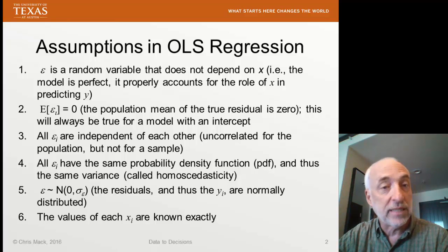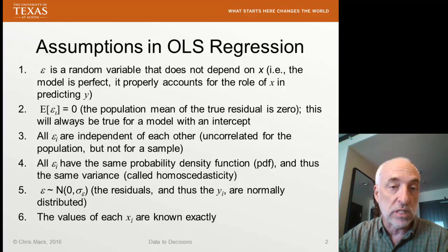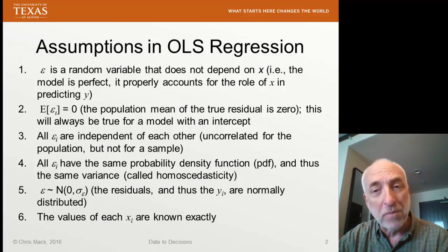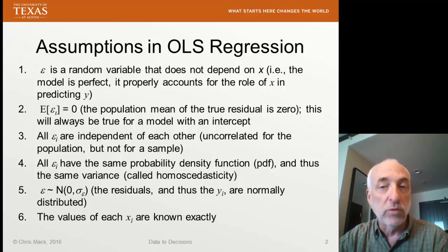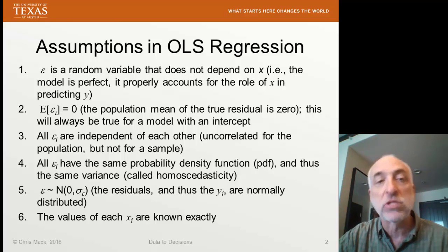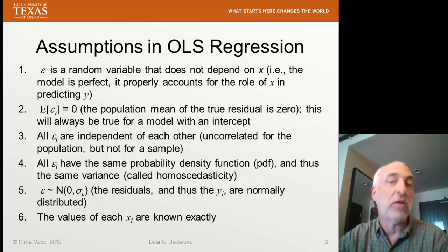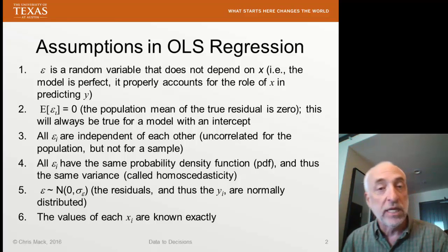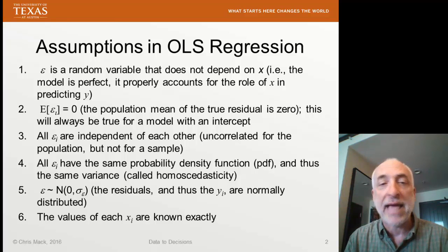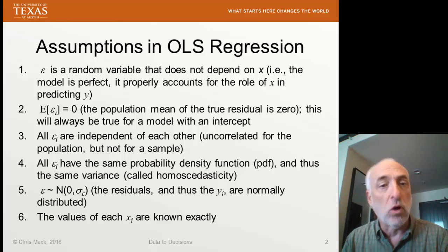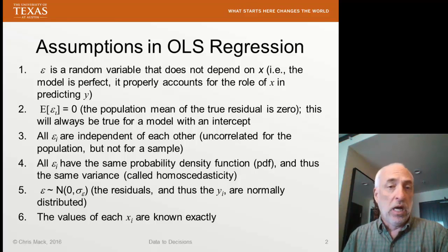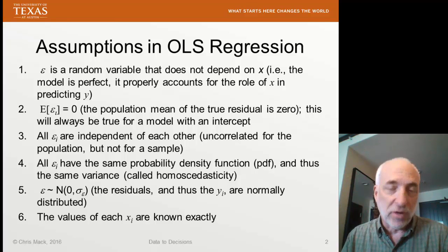The next assumption, number two, is that the expectation value of our residuals is zero. This is always going to be true when we fit our model if our model has an offset term or an intercept in it. By default, we will adjust the intercept term such that the residuals average to zero — that's how the best fit intercept term is created. So as long as our model has this intercept term, this assumption will always turn out to be true. Since that will be the case for most of our work, we'll end up ignoring assumption number two most of the time.